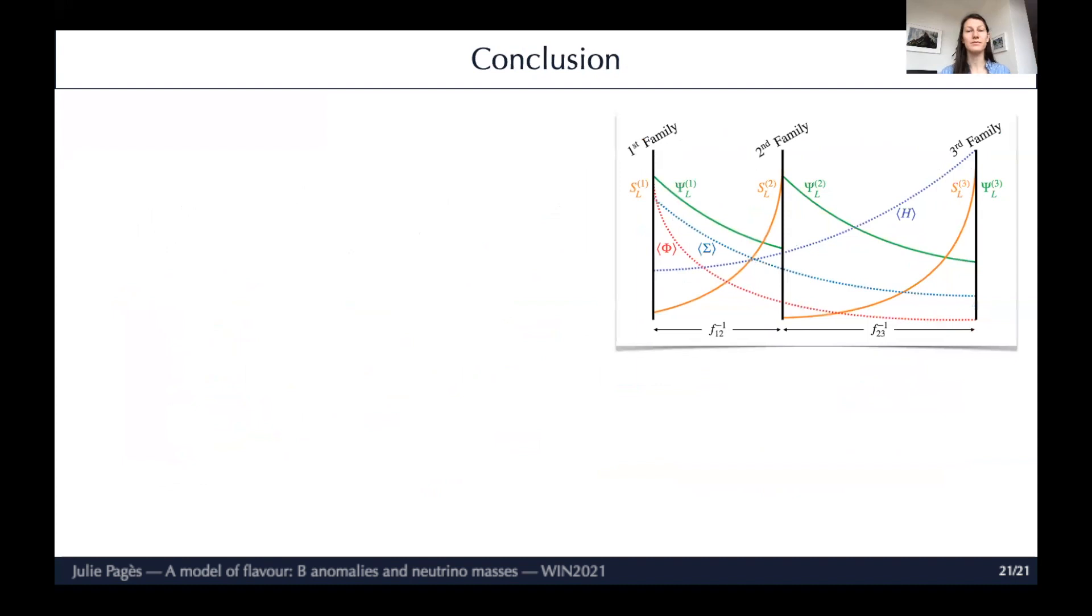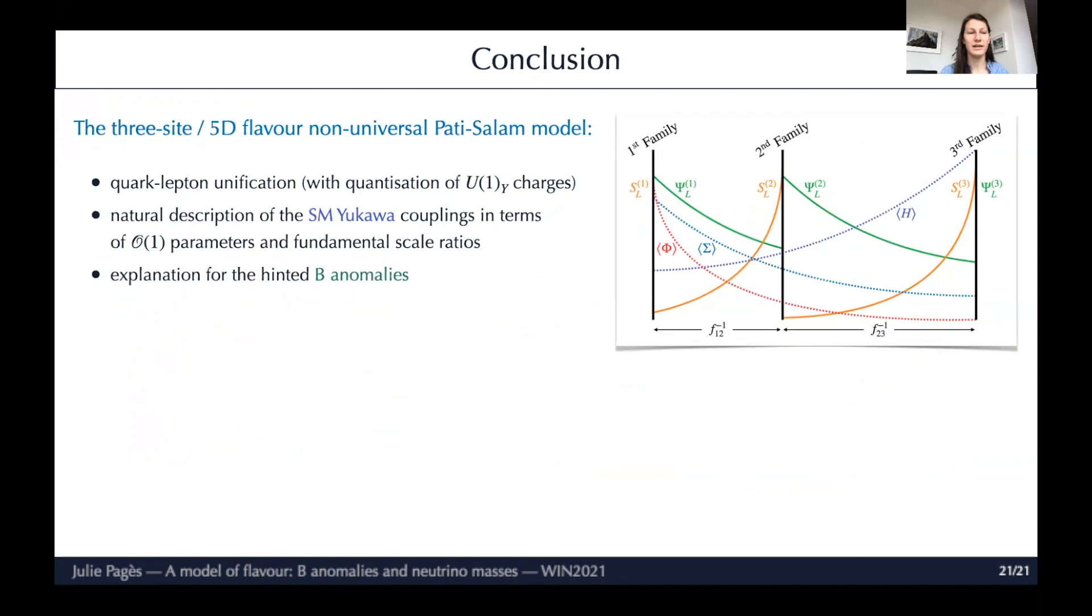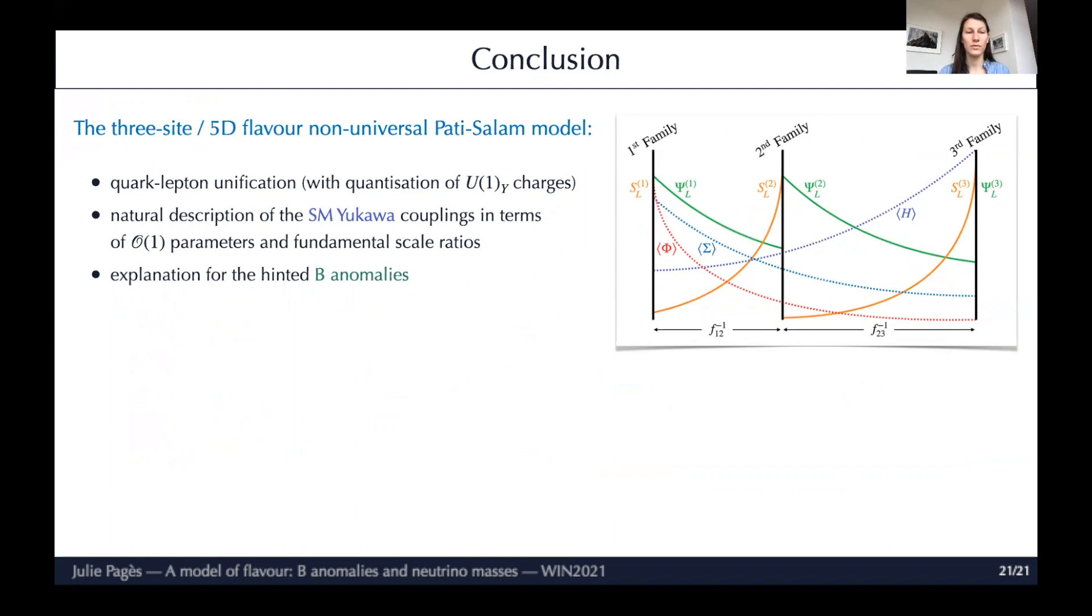Now to conclude, the three-site or 5D flavour non-universal Pati-Salam model is quark-lepton unification with quantization of U(1) charge. It gives a natural description of the standard model Yukawas and explains the B anomalies. The neutrino extension is minimal - it only adds three fermion singlets and a scalar singlet breaking U(1) fermion number. It yields an anarchic light neutrino mass matrix despite the U(2)^5 that was in the Yukawa sector. It predicts PMNS unitarity violation mostly in the τ-τ entry, and it finds a really natural setup in the context of extra dimensions. Thank you very much for watching.